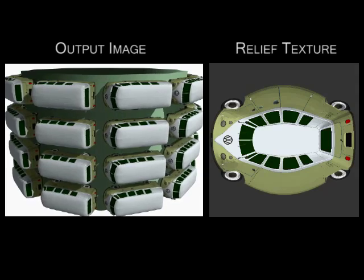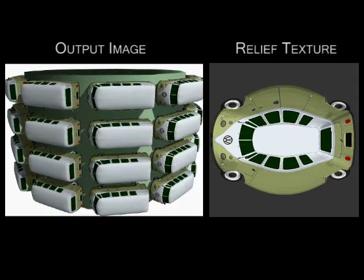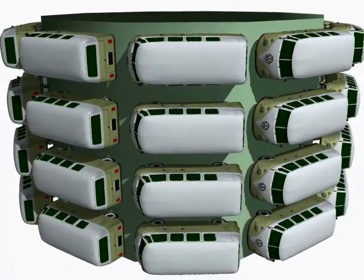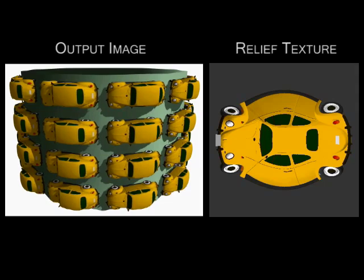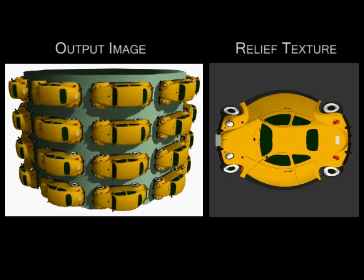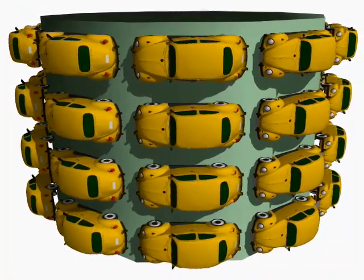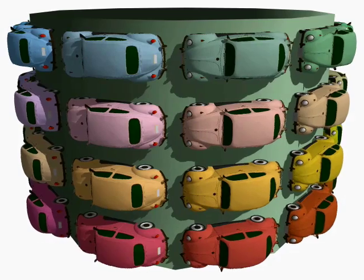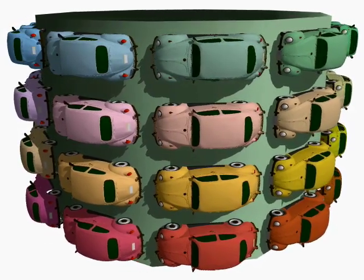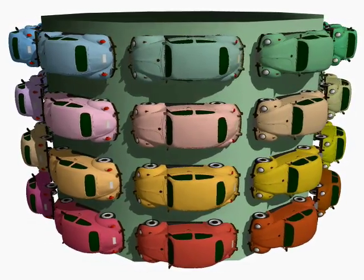Here an occlusion relief texture captures an entire car. Cars of different color can be easily obtained by using a single occlusion relief texture and altering the body color during rendering.